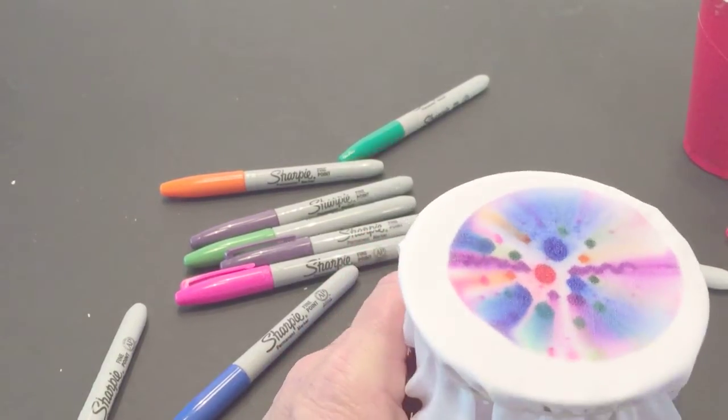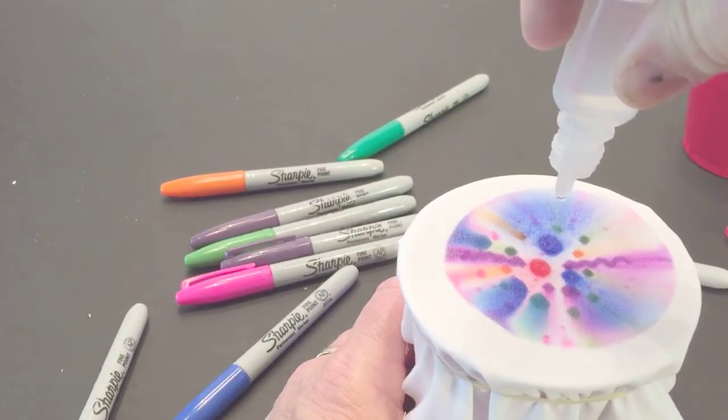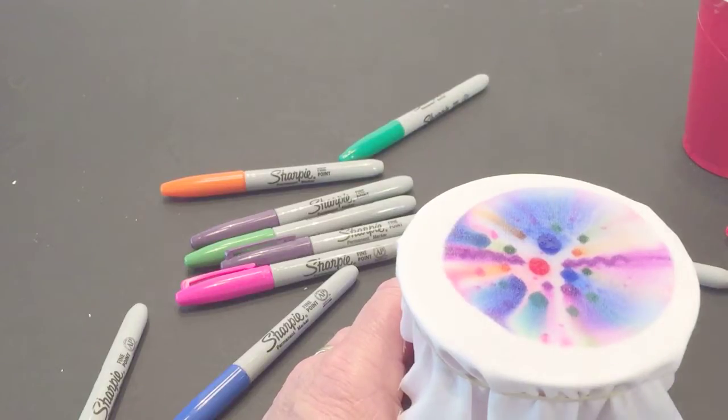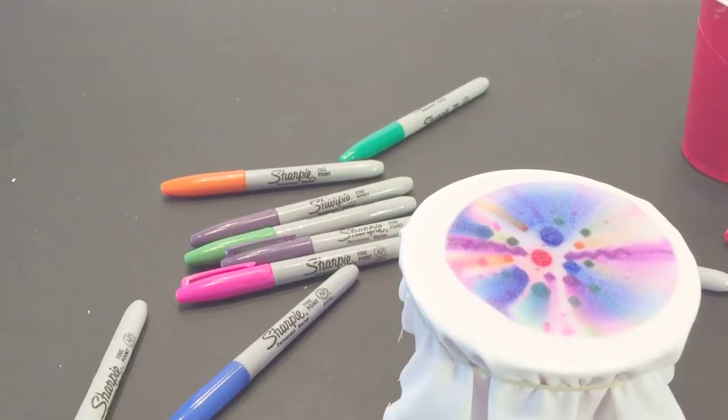Make sure you're in a well-ventilated area because the rubbing alcohol needs proper ventilation. It's still going there, spreading. You kind of have to just judge on how much you put because you don't want to go over the edges. It's going to continue to go slowly. You just have to monitor that as it goes.